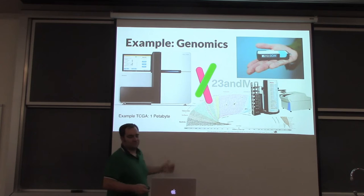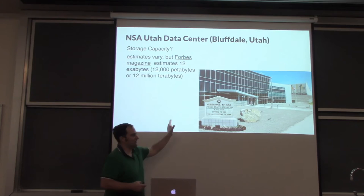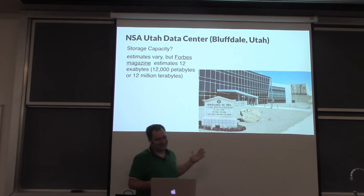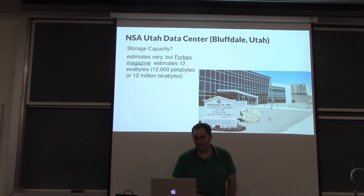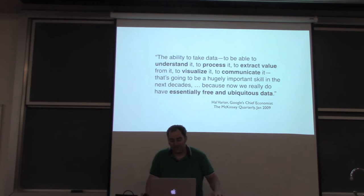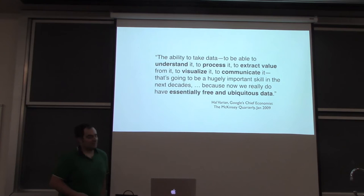Then there's intelligence. The NSA Utah Data Center — Forbes Magazine estimates it stores about 12 exabytes. The ability to take data, understand it, process it, extract value, visualize it, and communicate it is going to be a hugely important skill in the next decade. We now have essentially free and ubiquitous data. Visualization and other data science disciplines like machine learning and statistics are really at the heart of this.